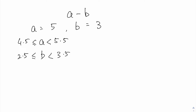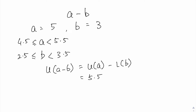In order to get the upper bound of a minus b, you must understand that you have to take the upper bound of a minus the lower bound of b. So the upper bound of a is 5.5, minus the lower bound of b which is 2.5, and that will give us 3.0.